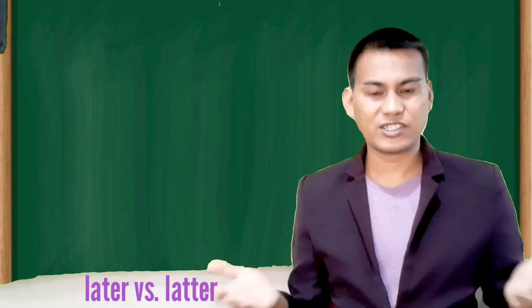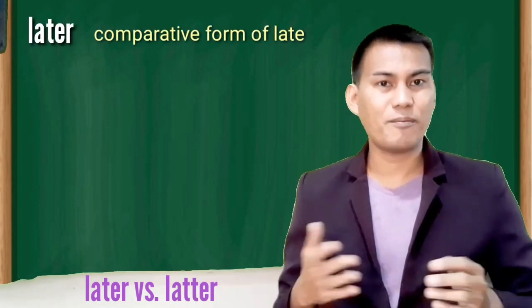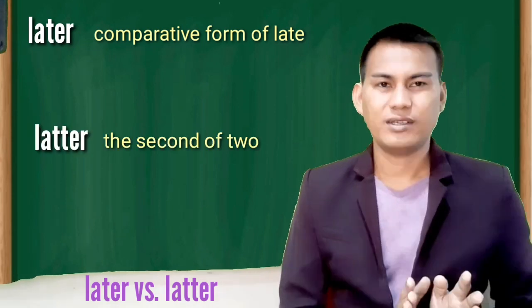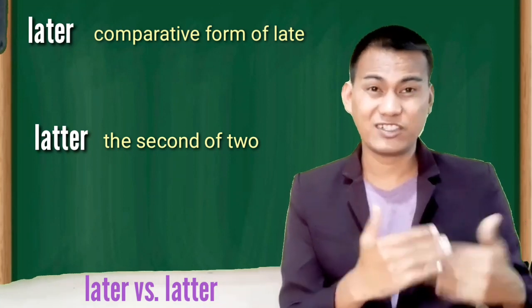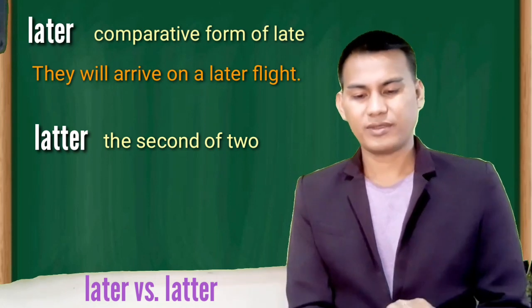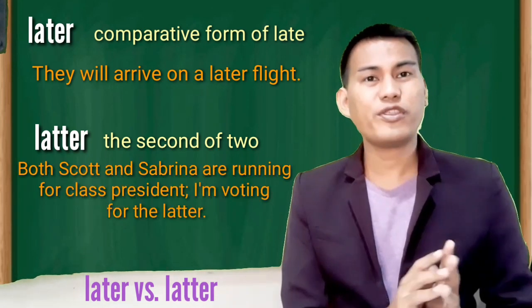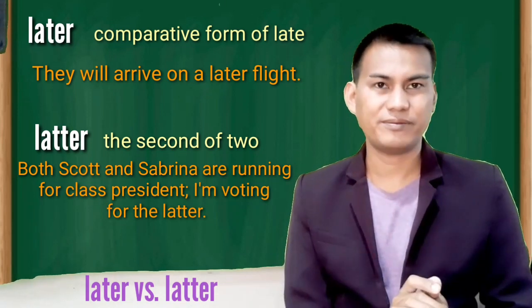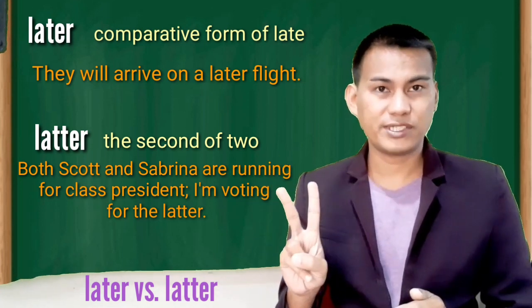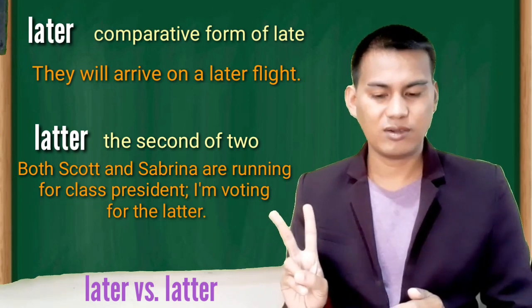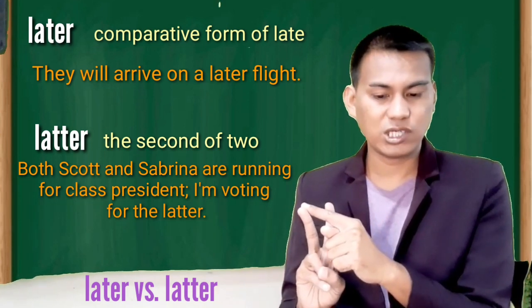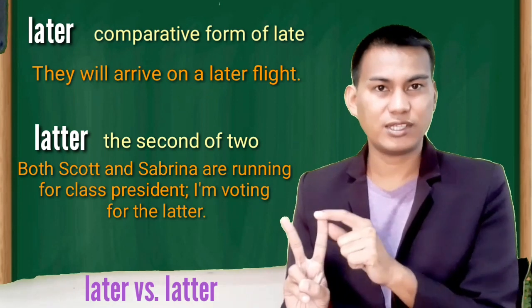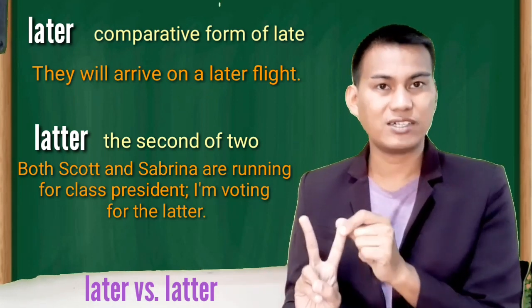Later versus latter. Later is the comparative form of late. So, you have late, later, latest. Latter means the second of two. The former is the first one being mentioned whereas the latter is the second one being mentioned. They will arrive on a later flight. Both Scott and Sabrina are running for class president. I'm voting for the latter. The former, the first one being mentioned is Scott. The second one being mentioned is Sabrina. So, former is Scott. The latter is Sabrina. So, I am voting for the latter and the latter means Sabrina.